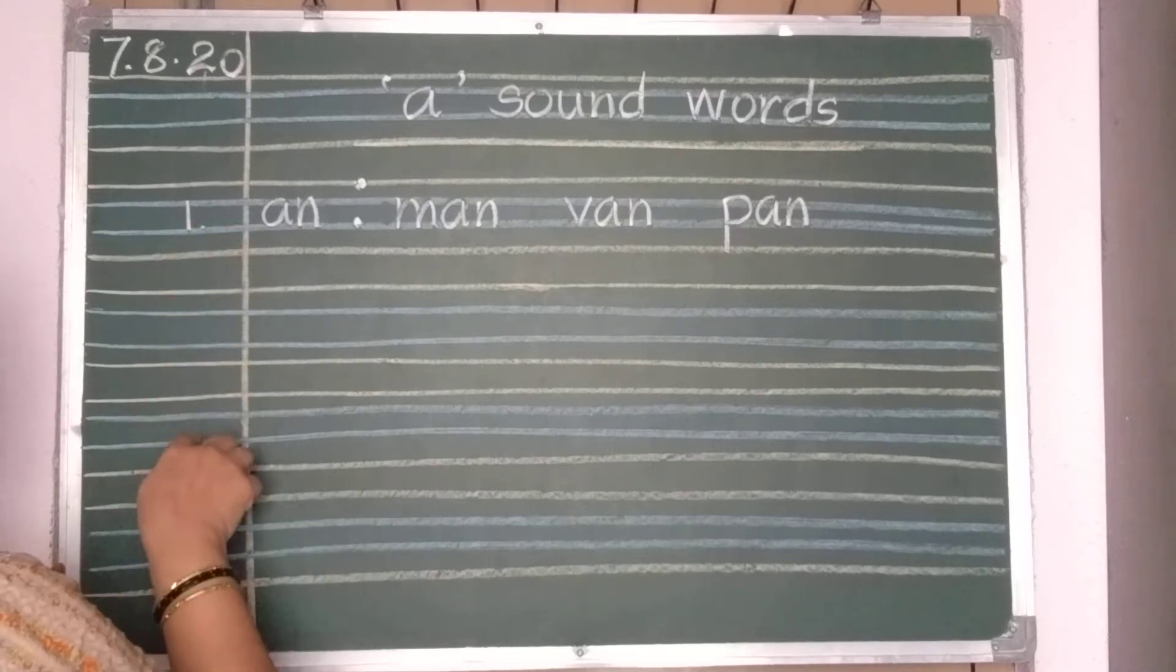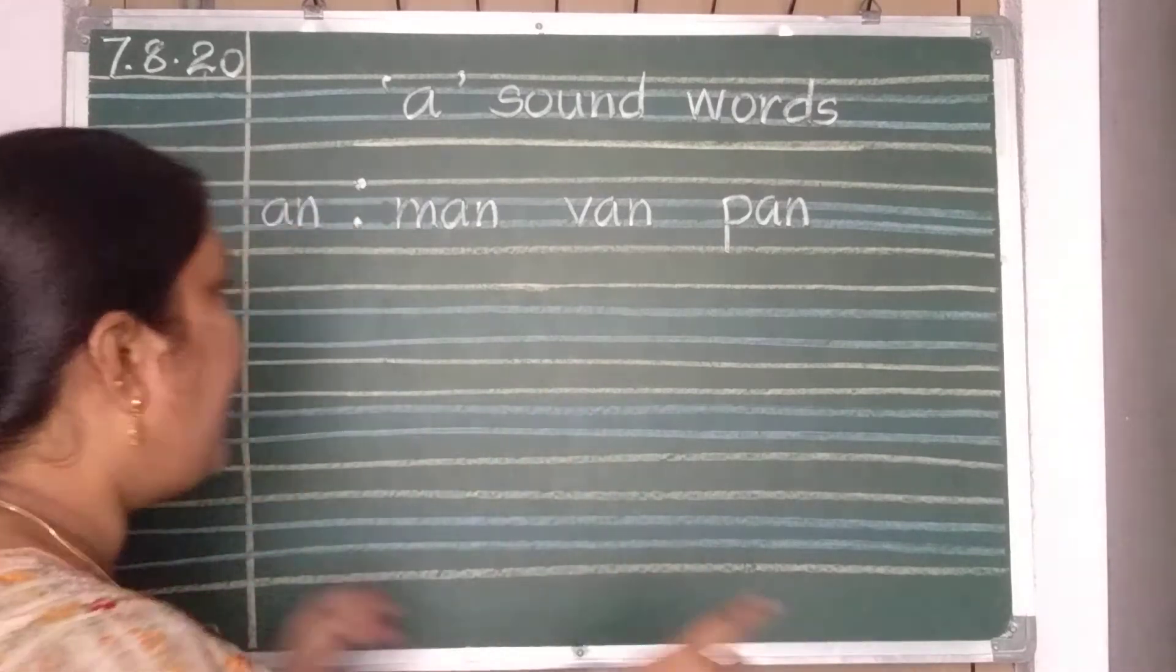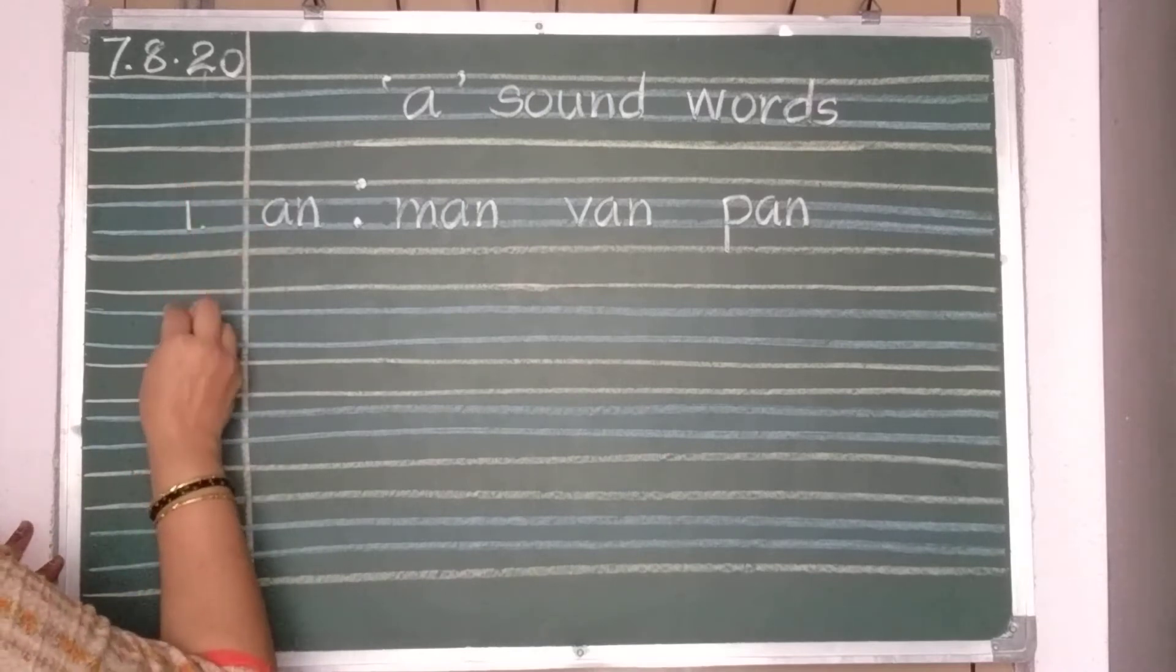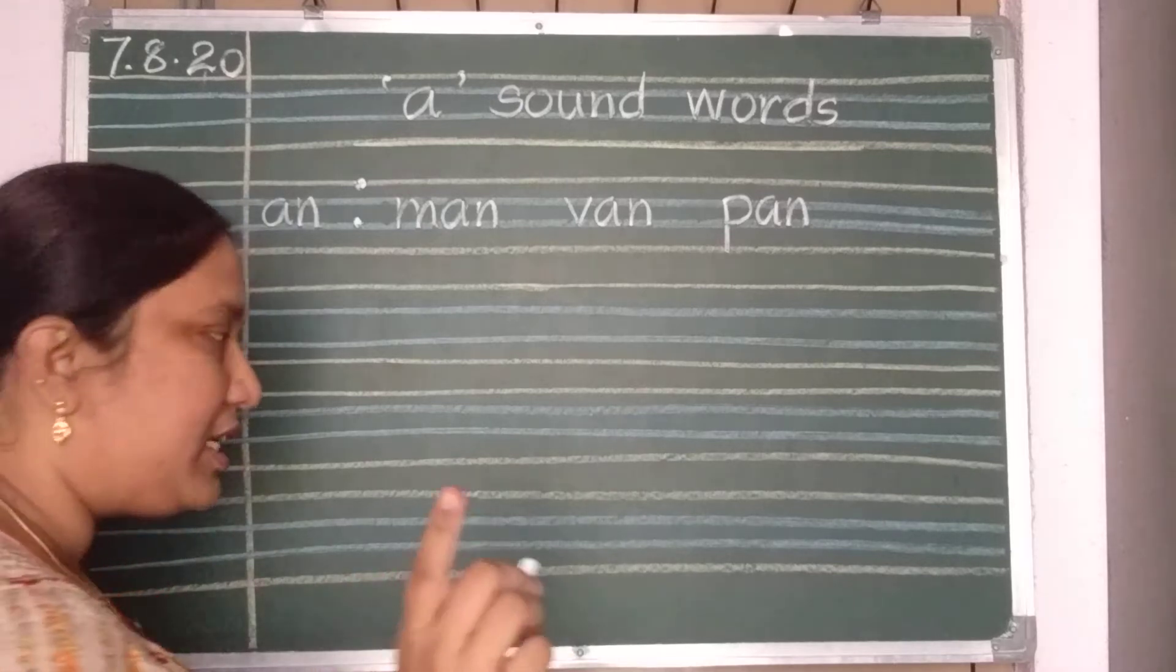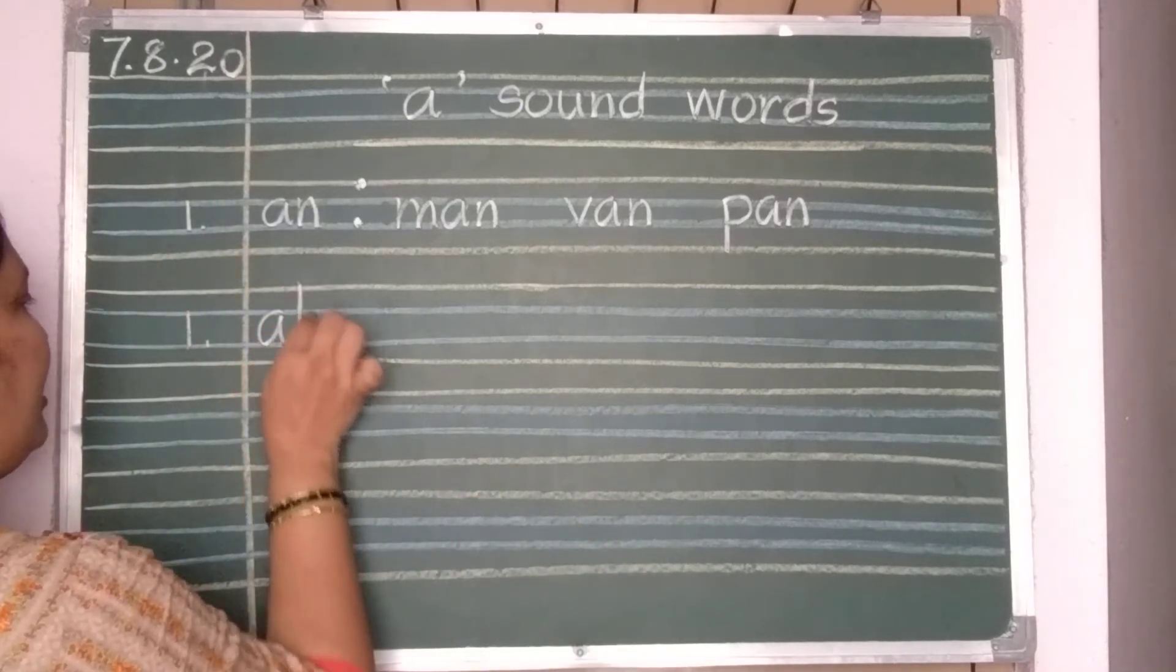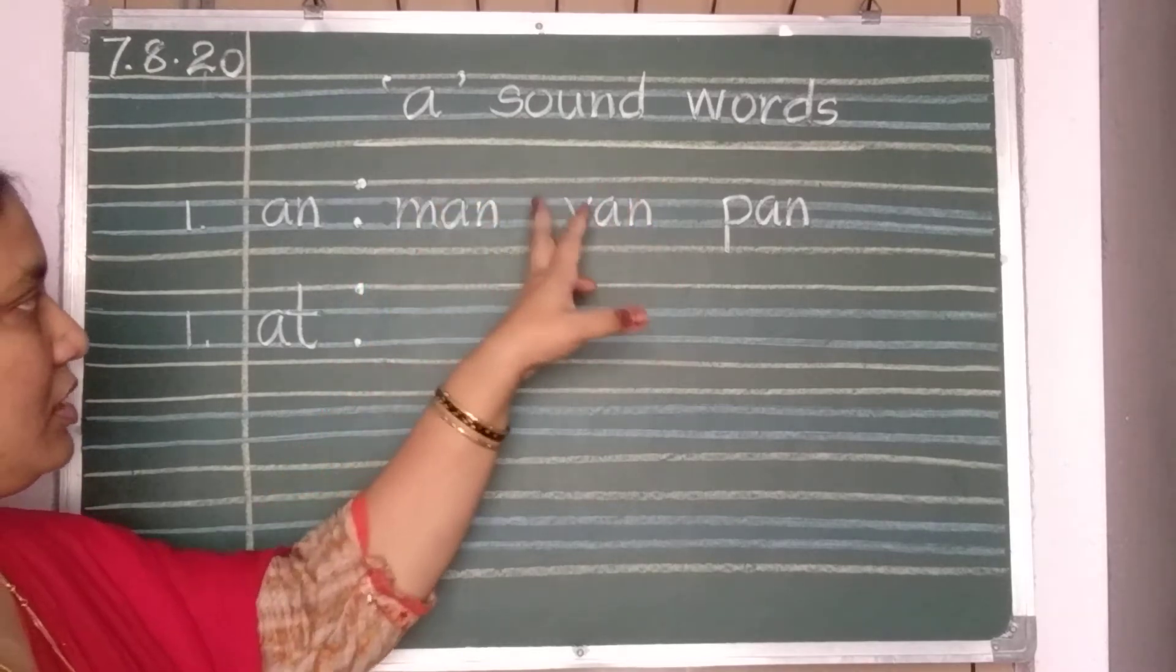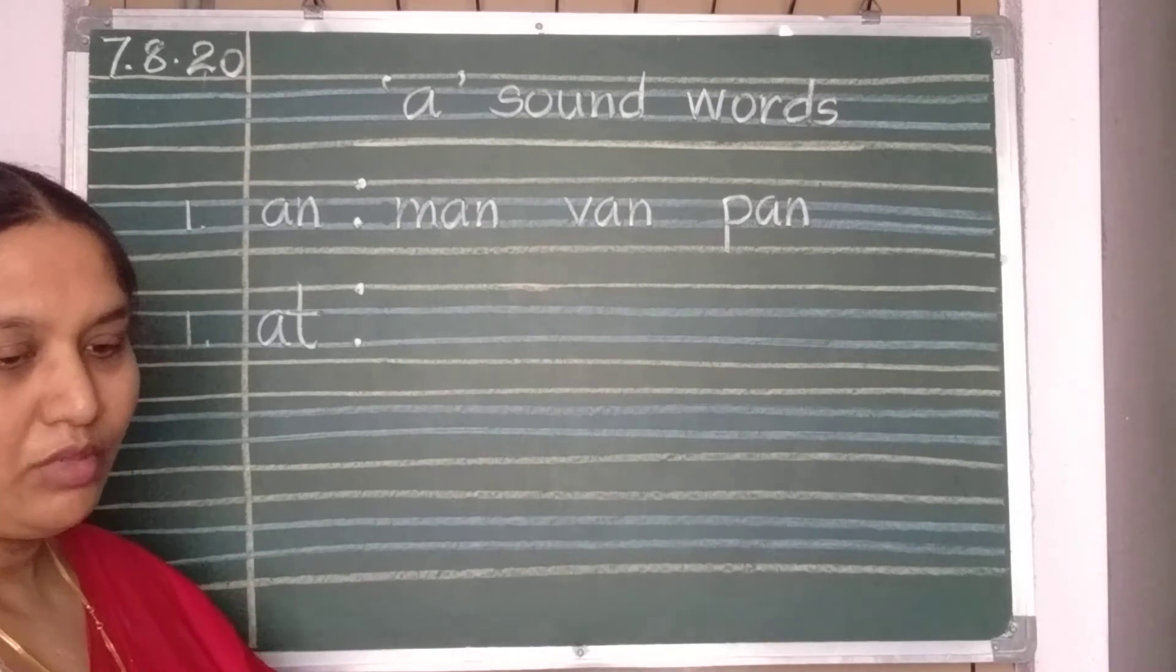One, two and three. Because I don't have space, I am writing only one time. But you should write the same spellings three times. After writing three times, again number 1, you should keep A, N words over. After writing A, N words, now we are going to write A, T words. Again two dots. Understood children. Each words. Man, van and pan. Three times you should write.